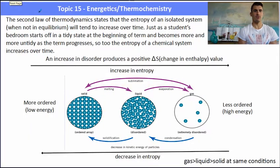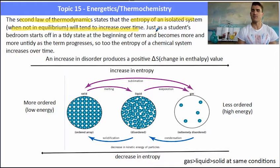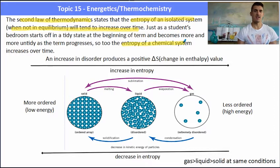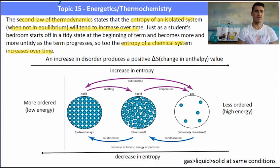The second law of thermodynamics states that the entropy of a system will tend to increase over time. Just as at the start of studying everything looked nice, clean, and legit, and then over time it's become a bit of a mess. So we say that over time, the entropy of a chemical system tends to increase.